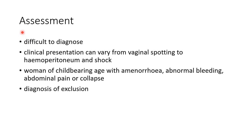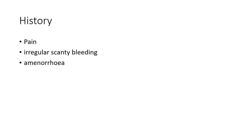Now let us see about the assessment of a case of ectopic pregnancy. Ectopic pregnancy is difficult to diagnose because the clinical presentation can vary from vaginal spotting to hemoperitoneum and shock. It should be suspected in women of childbearing age with amenorrhea, abnormal bleeding, abdominal pain, or collapse. It is basically a diagnosis of exclusion. The woman will give a history of pain, irregular scanty bleeding, and amenorrhea.